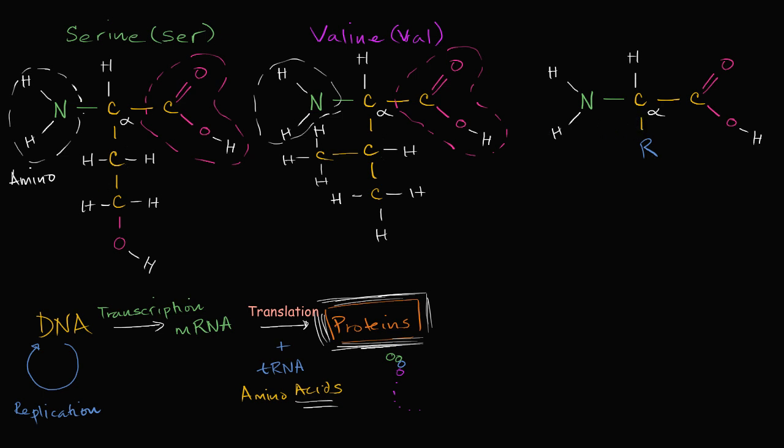So you see in serine, you have this, what you could call an alcohol side chain. In valine right over here, you have a fairly pure hydrocarbon side chain. And so in general, we refer to these side chains as an R group. And it's these R groups that play a big role in defining the shape of the proteins and how they interact with their environment and the types of things they can do.